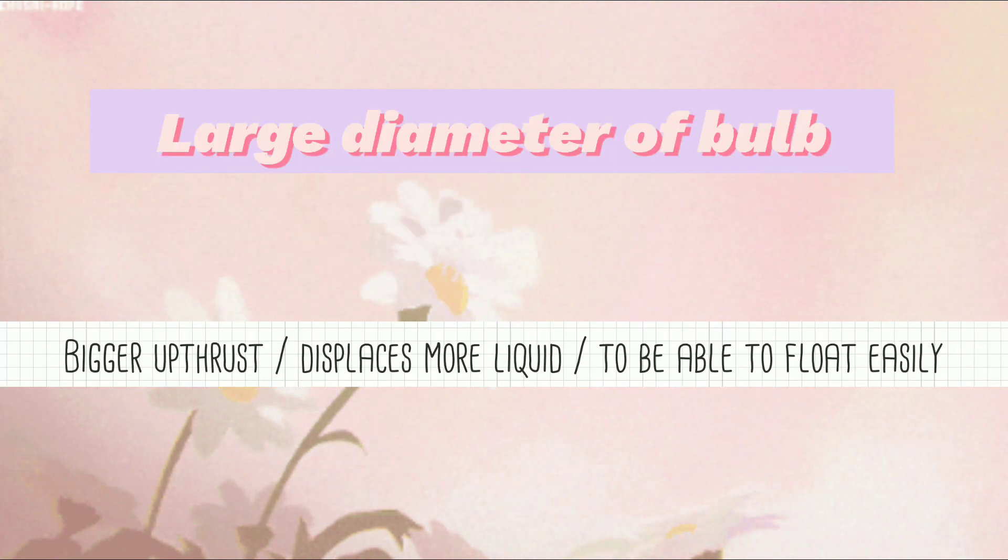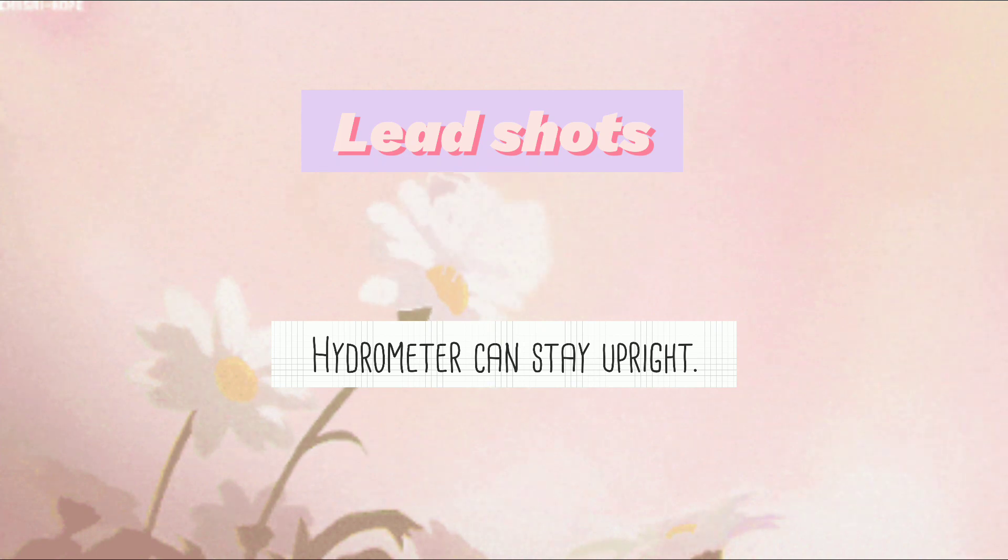Large diameter of bulb creates bigger upthrust, displaces more liquid to be able to float easily. Lead shots so that the hydrometer can stay upright.